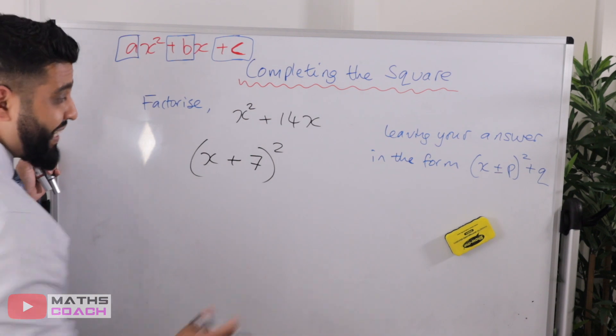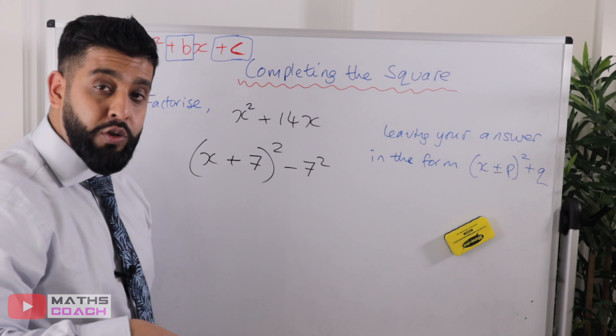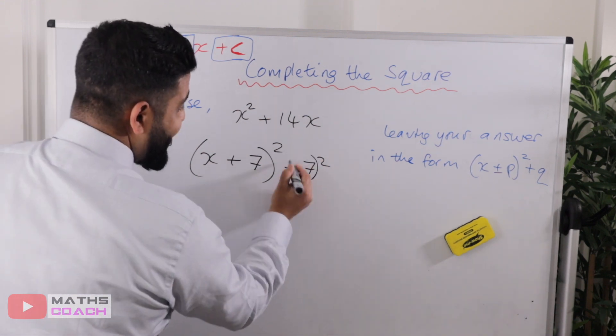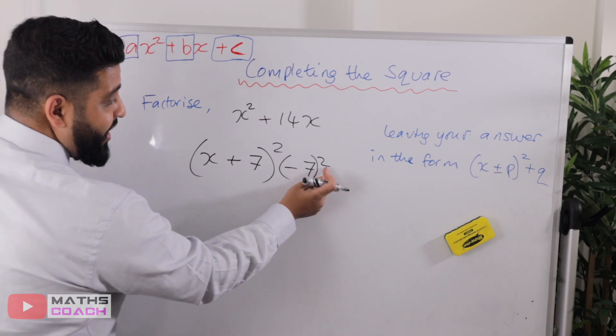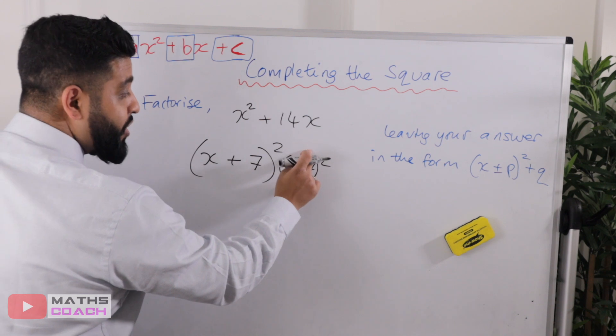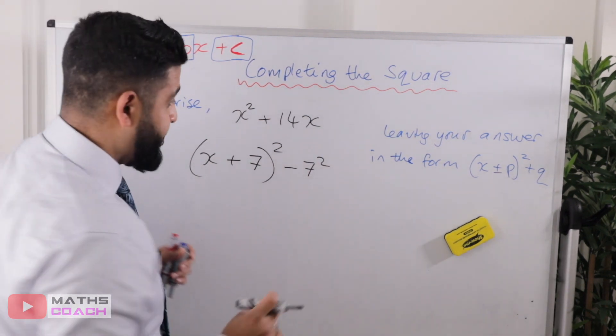Step number three, take away that value squared. It's take away that value squared. Not, or often what students do is they do this. They end up squaring minus seven, getting an overall positive forty-nine, which is wrong. You take away the value squared.